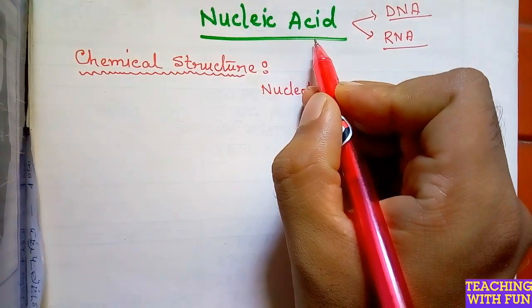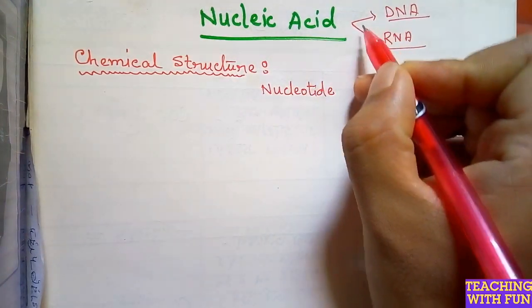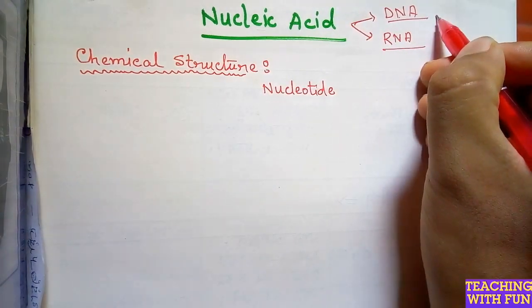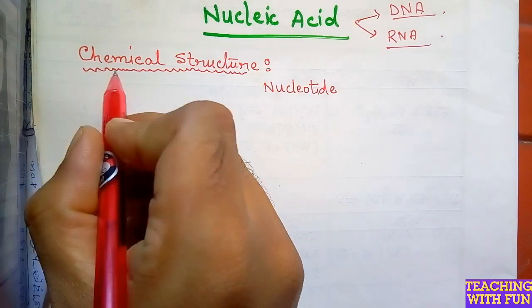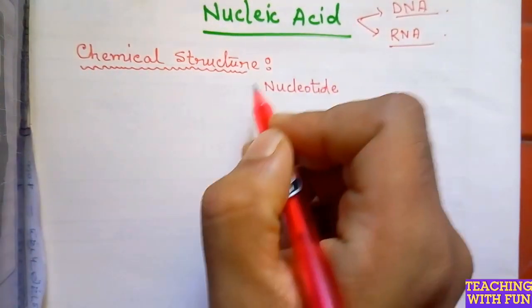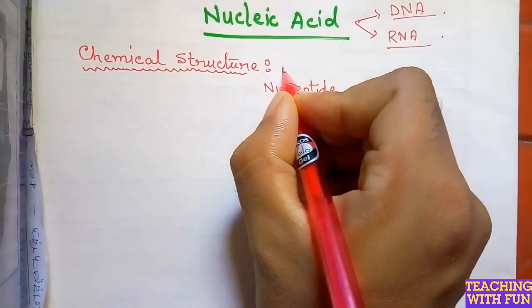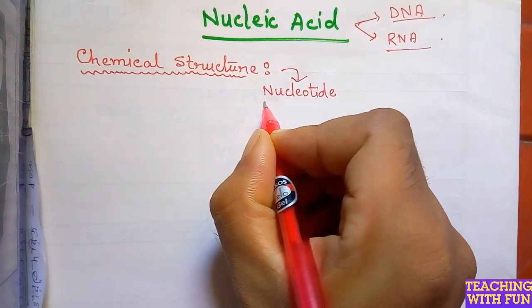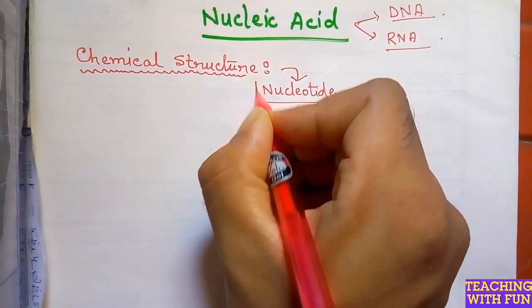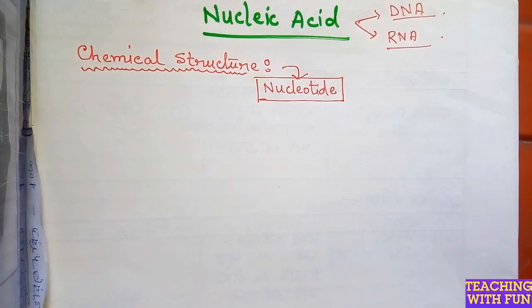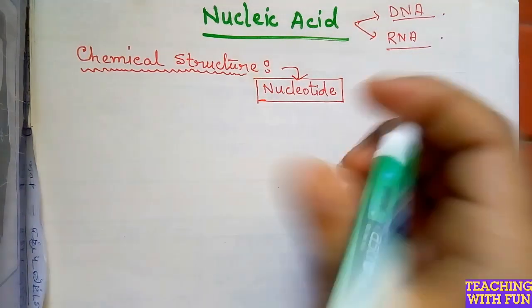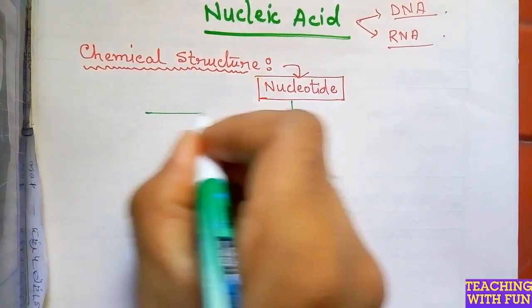Nucleic acids are usually of two types: DNA, or deoxyribonucleic acid, and RNA, or ribonucleic acid. Now see the chemical structures of nucleic acids. Nucleic acids are formed by many nucleotides, which is the unit of nucleic acid.